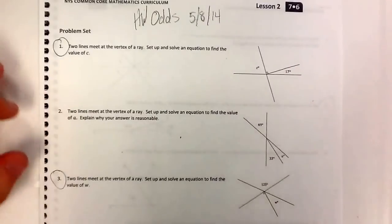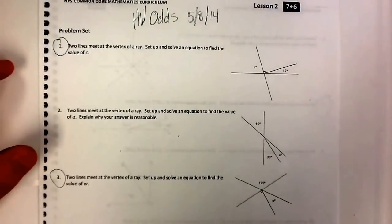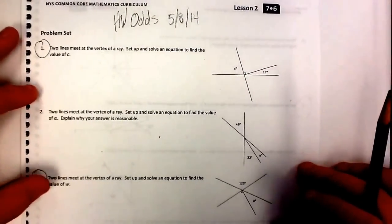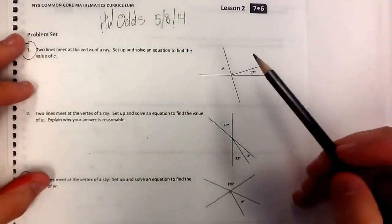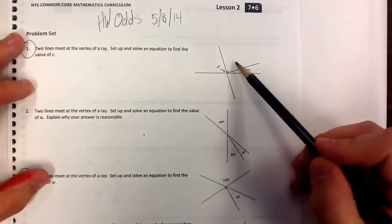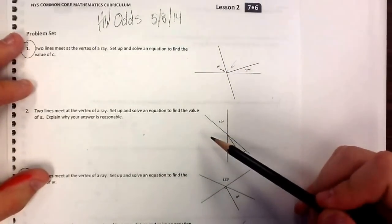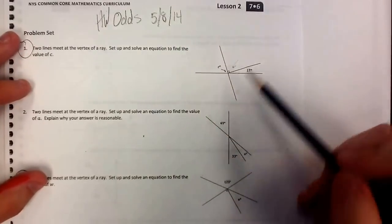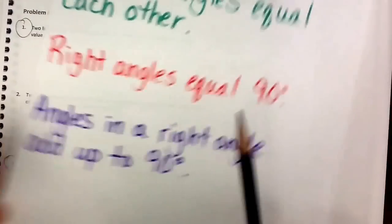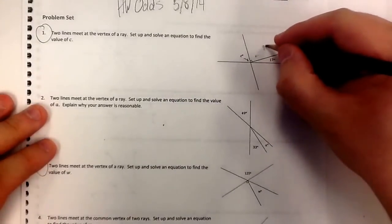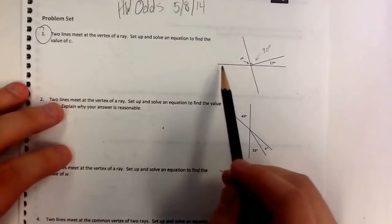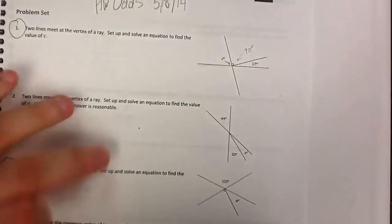On the homework, number one says two lines meet at the vertex of a ray. Set up and solve an equation to find the value of C. The first thing we need to do is figure out our equation. If we look at this picture, we see that this angle right here is labeled C. This angle right here has that little square that means it's a right angle, which means it equals 90 degrees. So we can label this 90 degrees.